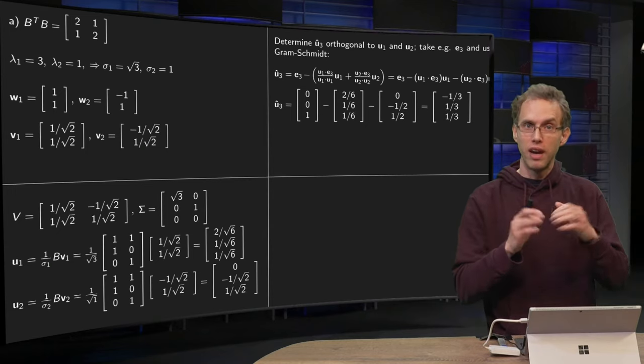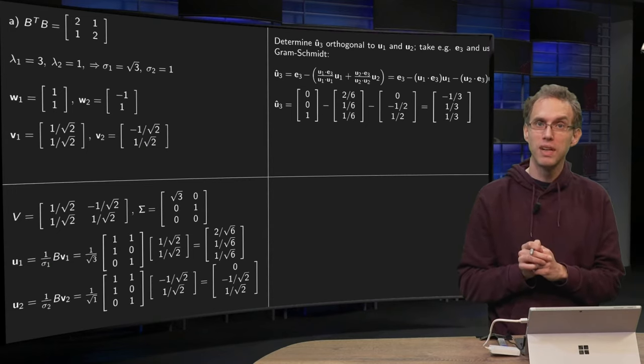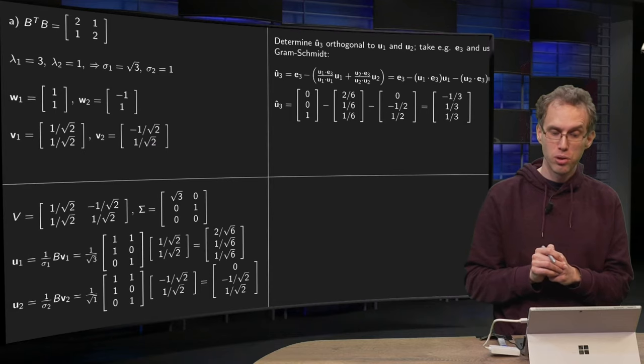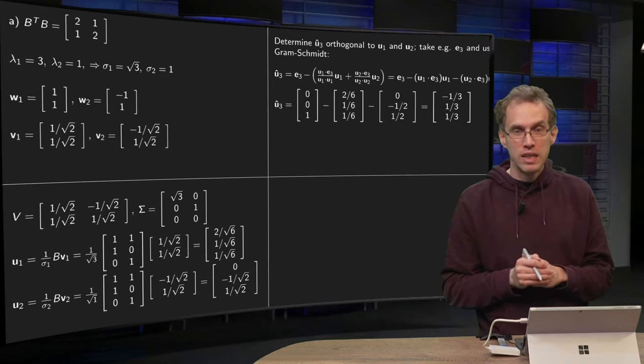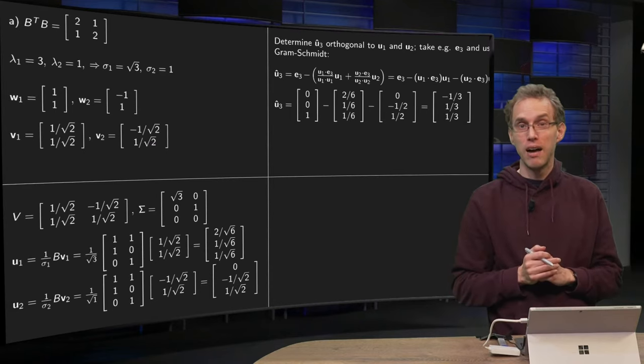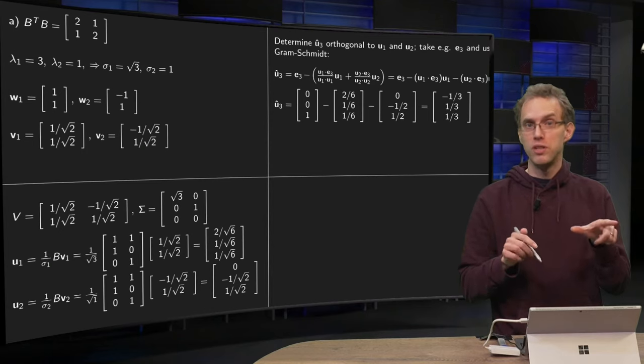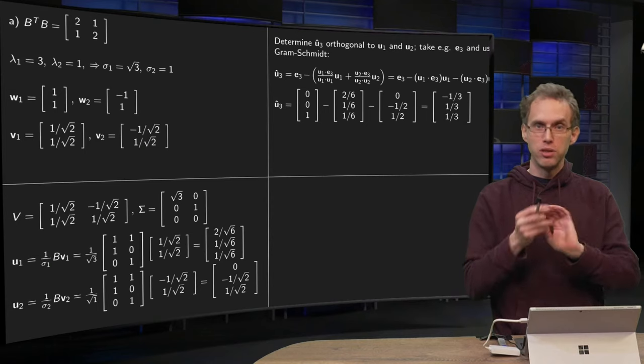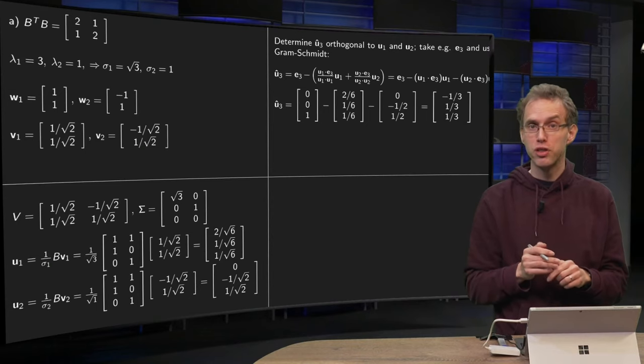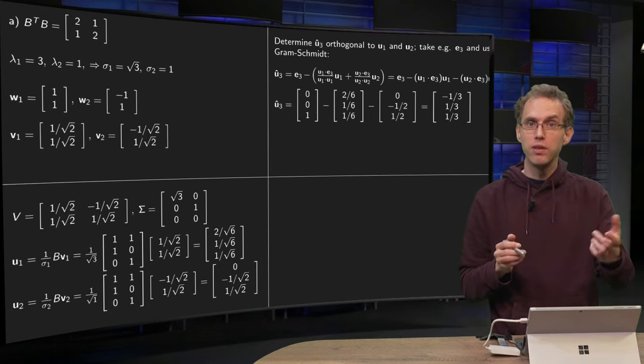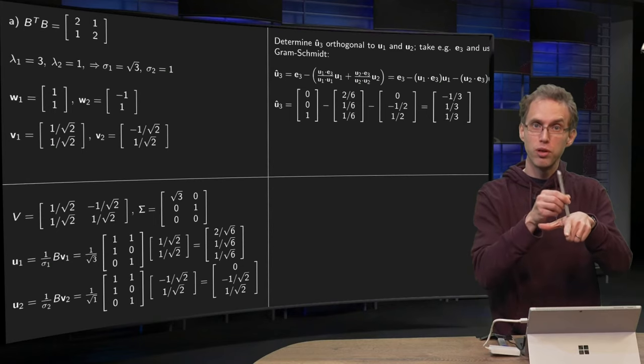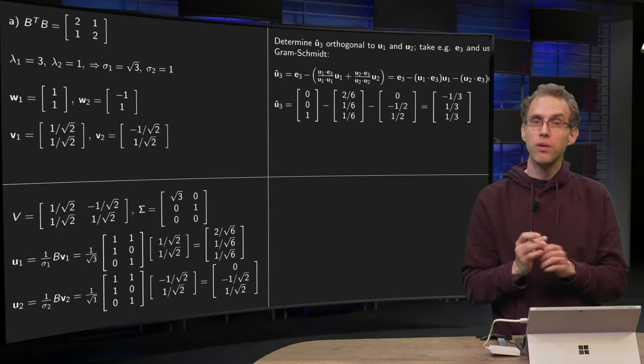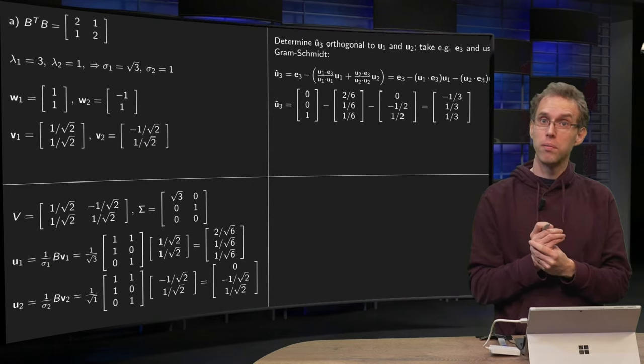So first we determine U3 hat without bothering about its norm yet, which is orthogonal to U1 and U2. So we just take some vector in R3, hope it's not in the span of U1 and U2. Just take something like (0, 0, 1) for example, an easy one. And then we use Gram-Schmidt to form an orthogonal basis, and in that way we find a third vector for our matrix U.